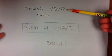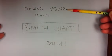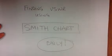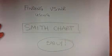Now we're going to learn how to find the VSWR, voltage standing wave ratio, of a particular load using the Smith chart easily. Why easily? Because it's easy to do. So here's how you do it.